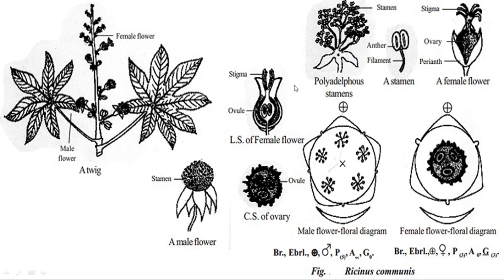Female flower: this is an apical single flower. One feature is perianth and an ovary. The ovary has a style. Stigma is divided into six segments.